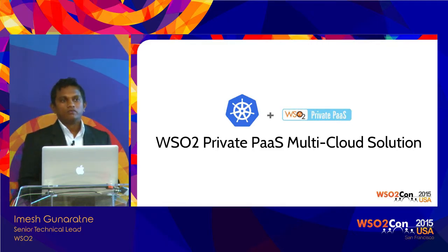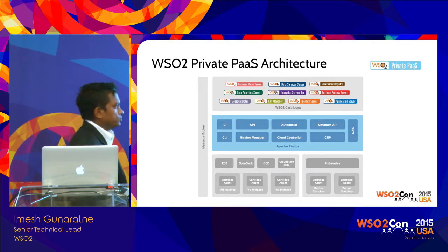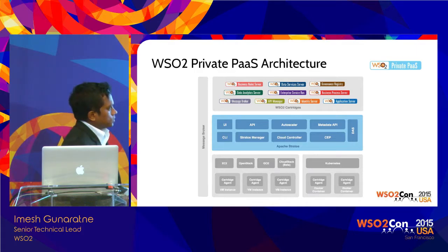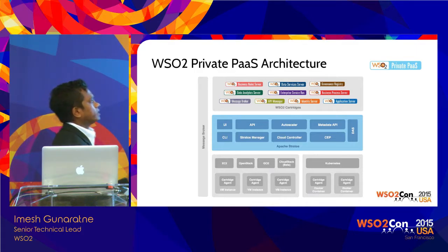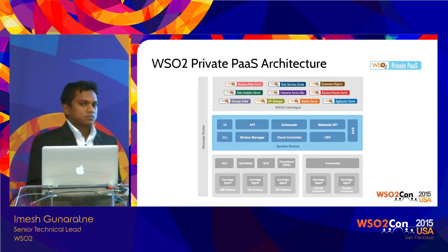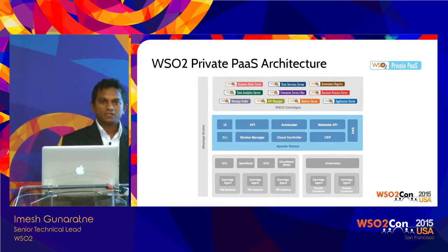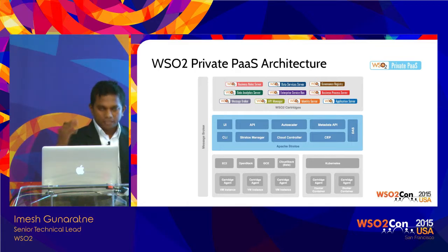WSO2 Private PaaS is built on top of Apache Stratos, which talks to the IaaS layer using Apache jclouds. For Kubernetes, we directly talk to the Kubernetes API using an IaaS provider interface. On top of this we have WSO2 products running as cartridges. In the latest release, cartridges can be modeled using a composite application model where a complete solution with multiple products can define dependencies, startup orders, and scaling requirements — bringing up the entire solution at once across multiple clouds, regions, and zones using policies.